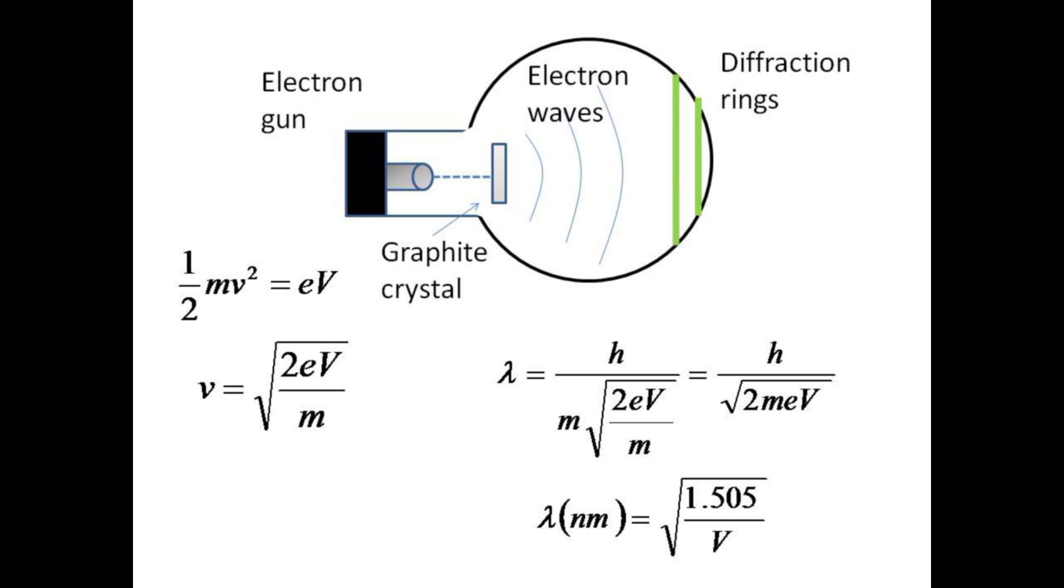The speed of the electrons in the beam is determined by the accelerating voltage, capital V, on the electron gun. We find that the de Broglie wavelength of the electrons in nanometers is just the square root of 1.505 over V. Measure the accelerating voltage to give the wavelength of the electrons.